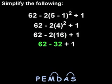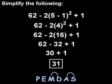So here, we subtract 62 minus 32, which is 30. So we have 30 plus 1, which is 31.